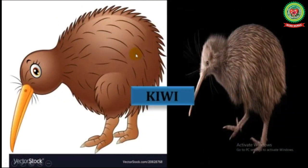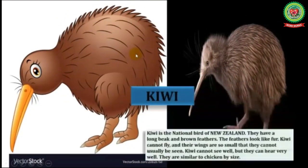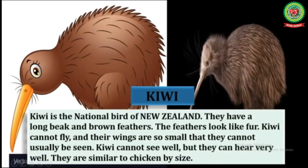Next is kiwi. The kiwi is the national bird of New Zealand. They have a long beak and brown feathers that look like fur. Kiwi cannot fly, and their wings are so small that they cannot usually be seen. Kiwi cannot see well but they can hear very well. They are similar to a chicken in size.